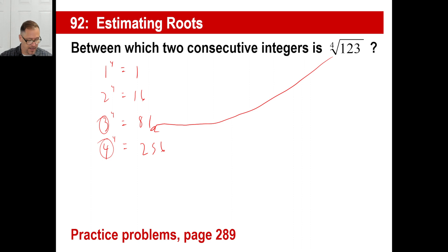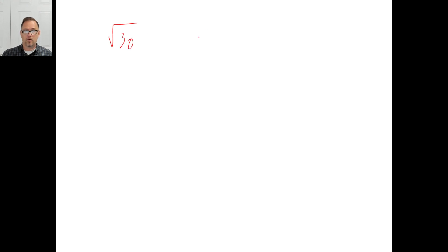On page 289, give those problems a try. The square root of 30: the square root of 25 is 5 and the square root of 36 is 6, so the square root of 30 is between 5 and 6. That's your answer.